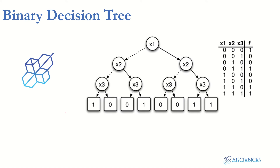A binary tree is a structure or graph in which each node has at most two children. For example, focusing on one node, it has a left child and a right child. Even if certain nodes have fewer than two children — or even one child — it is still called binary. The restriction is that no node should have more than two children. That is what defines a binary tree.